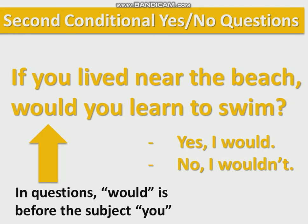Second conditional yes/no questions. For example, if you lived near the beach, would you learn to swim? In yes or no questions, and in all questions, 'would' is before the subject. In this example, the subject is 'you': if you lived near the beach, would you learn to swim? Would goes before the subject — would you learn to swim? Would he learn to swim? Would I learn to swim? Et cetera. And we have short answers: yes, I would; no, I wouldn't; yes, he would; no, he wouldn't; et cetera.